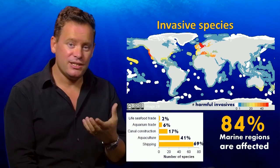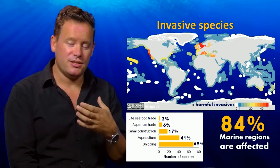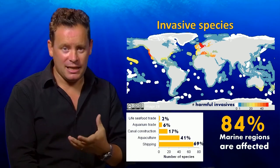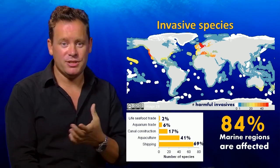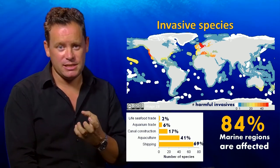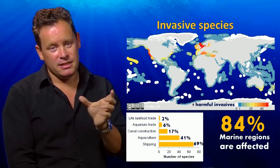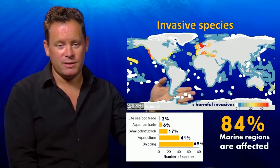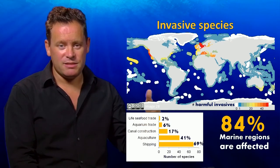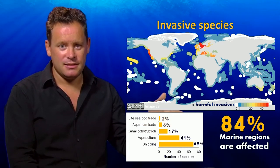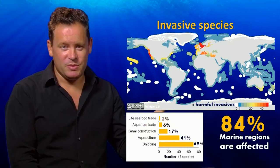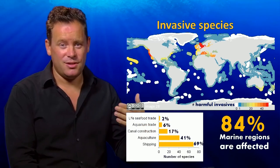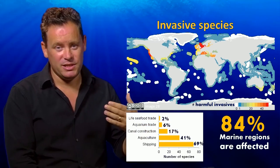The most common explanation is that a ship will be in one part of the world, fill its ballast tanks with water, and accidentally capture some local species. Then the ship moves — maybe carrying cargo to another part of the world — and when it's there, it opens its ballast and replaces it, releasing that species into a new environment. That's a major source of invasive species in the ocean.